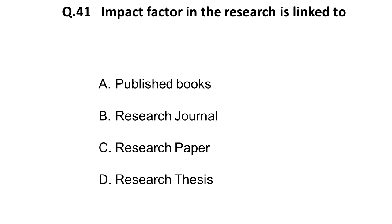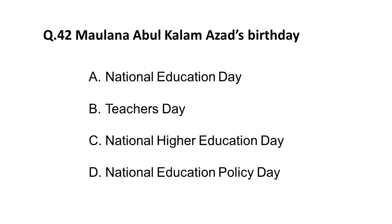Question 41: Impact factor in research is linked to — A) published books, B) research journal, C) research paper, D) research thesis. The correct answer is B: research journal. Impact factor is about research journals — the higher the impact factor, the more impactful the journal. High-impact journals are in greater demand among researchers.